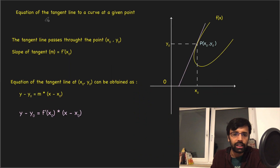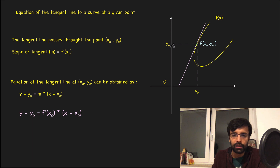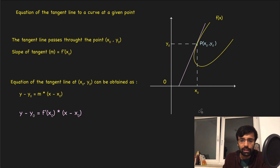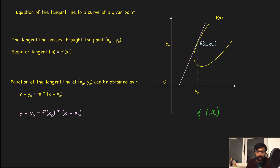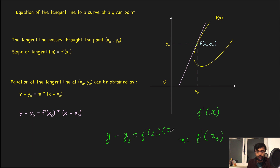So what is the basic question on this concept? How do we find the equation of tangent? Our curve is y equals f(x) and there is a point P(x₀, y₀). We know it passes through this point, and if we know the slope of the tangent, we can write y - y₀ = m(x - x₀). The slope m is f'(x₀), so the equation of tangent is: y - y₀ = f'(x₀)(x - x₀).